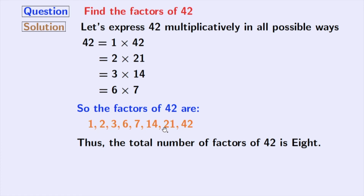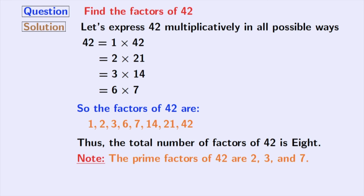Now look at these factors. We can see that 2, 3, and 7 among these factors are the prime numbers, because these numbers do not have any divisor other than 1 and that number itself. So we can say that the prime factors of 42 are 2, 3, and 7.